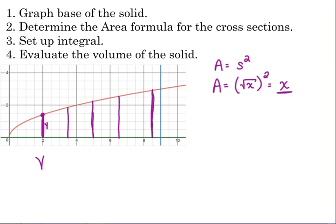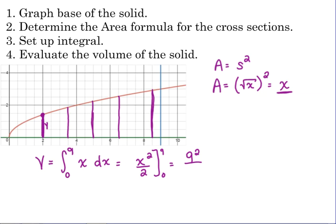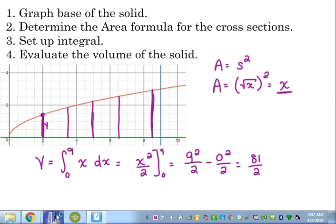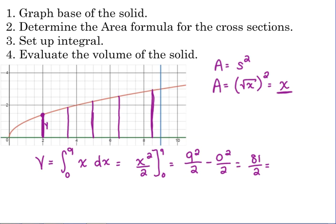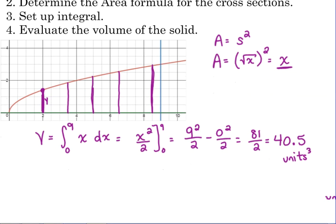Let's set up our integral. The volume equals the integral from 0 to 9 of our area formula, which is just x, with respect to x — so dx. Integrating: add one to the exponent, divide by the new exponent, evaluating from 0 to 9. We get 9² over 2 minus 0² over 2, which is 81 over 2 — that's 40.5. We are talking about volume, so we don't have specific units here, so we'll say units cubed.